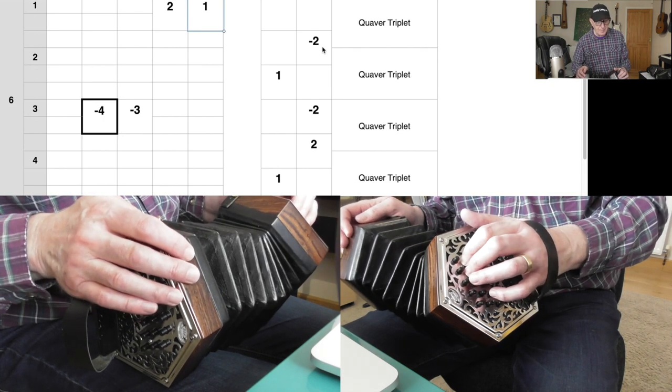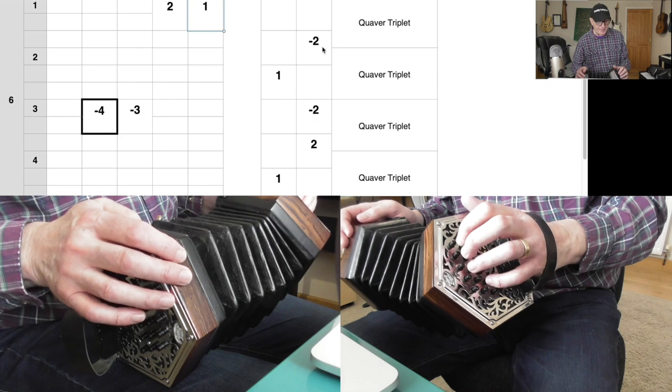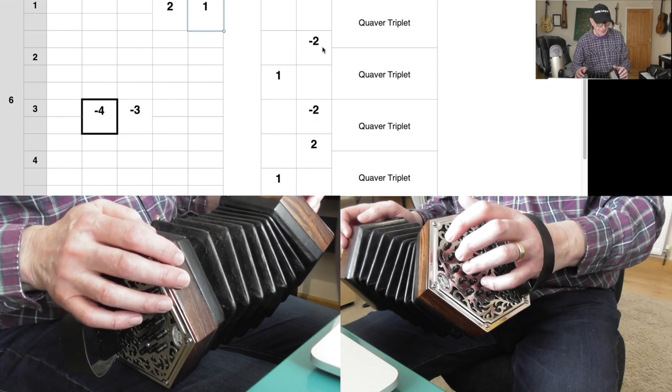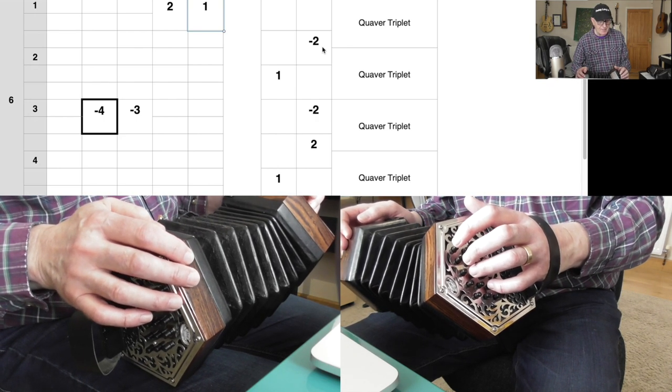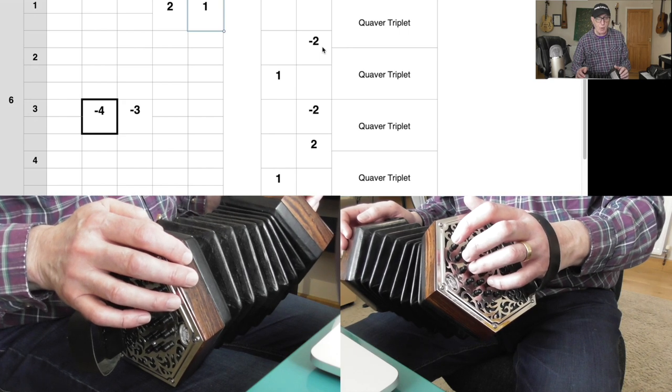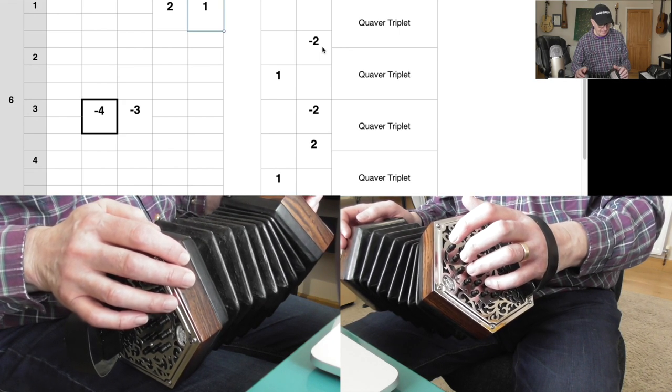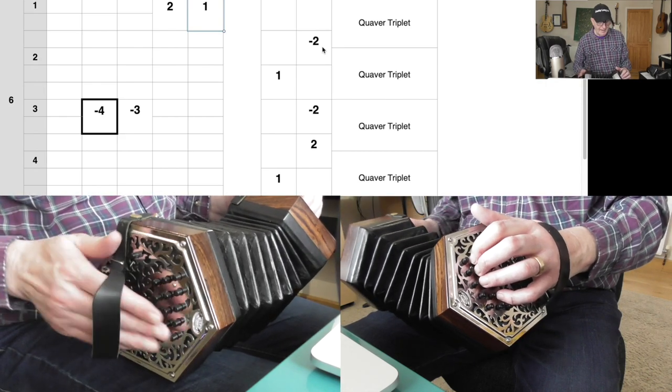That's on beat one. And on beat three, you come over to those two pull notes you've done loads of—button two, button three, row one and main row pull, fingers four and three. So that is beats one and three.